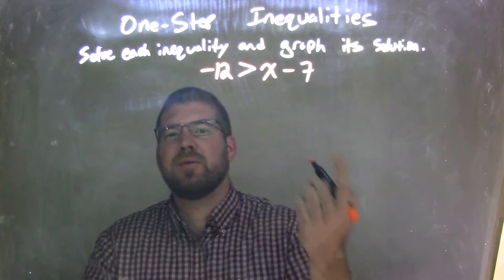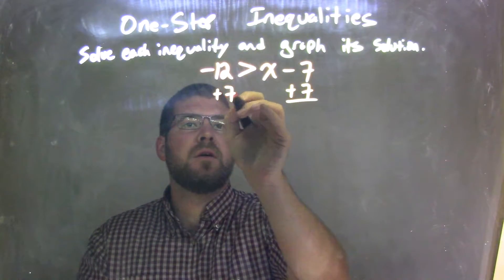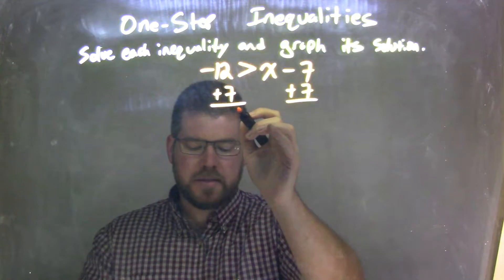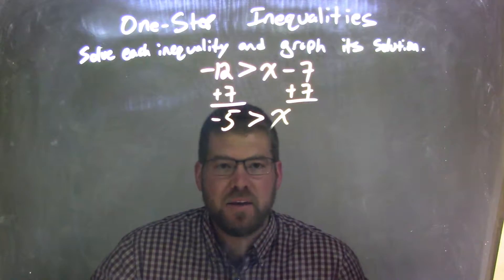Treat it basically as if this inequality was an equal sign. So I'm going to add 7 on both sides, and negative 12 plus 7 is negative 5.